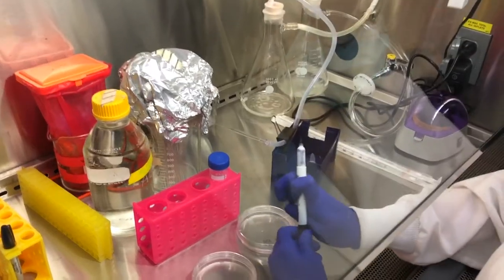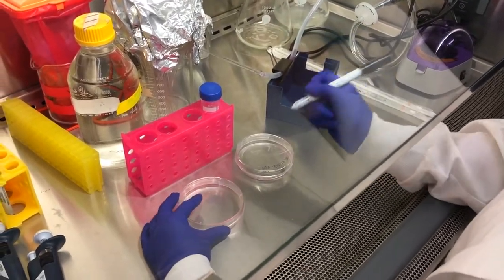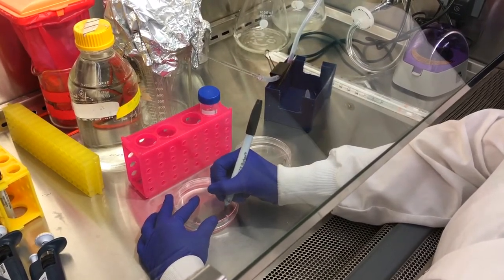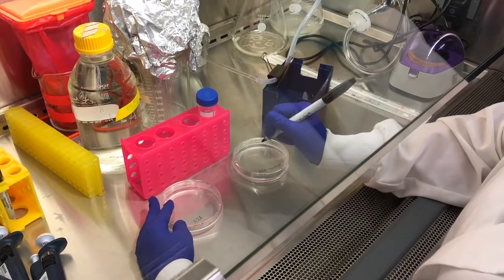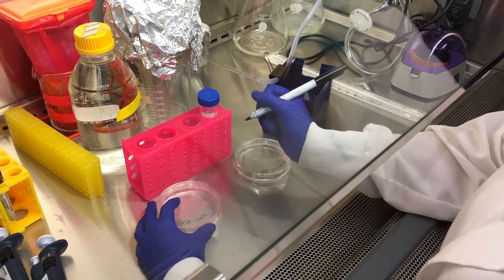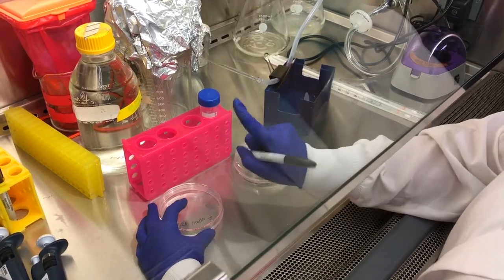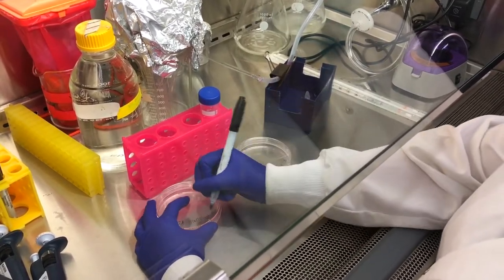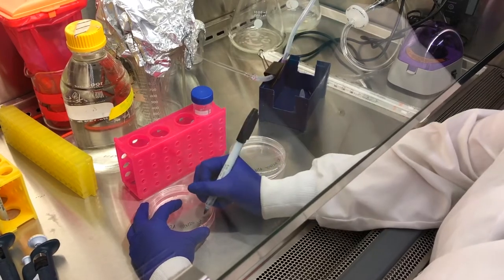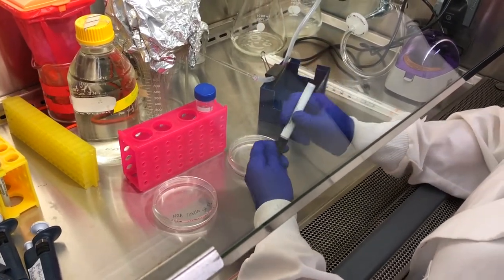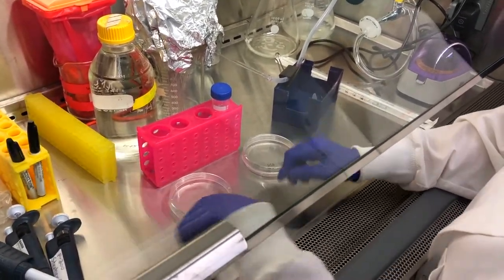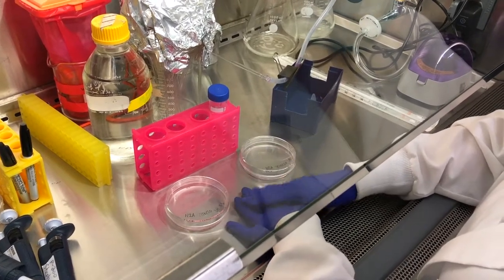And you're going to label your new plate. You want to label the cell type. And we are using N2A cells. You also want to label today's date. And you want your initials and the passage number. So we're going to put the letter P for passage. And this is our first passage. So I'm going to put number one. So whenever you do another round of cell passaging or cell splitting, you want to update your new plate with the date and the passage number.